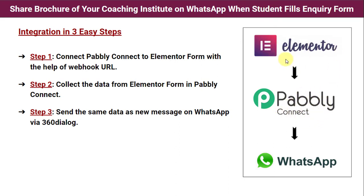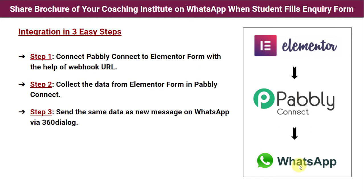If a person fills the form, the details of that person will be captured automatically in Pabbly Connect. In step three, we send that same data as a new message on WhatsApp via 360dialog. The data collected in Pabbly Connect from Elementor is transferred to 360dialog to send the message on WhatsApp. WhatsApp does not allow us to send messages directly, so we use WhatsApp's official API — 360dialog.